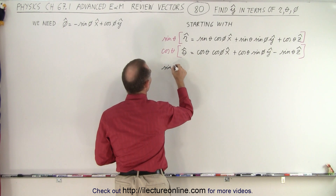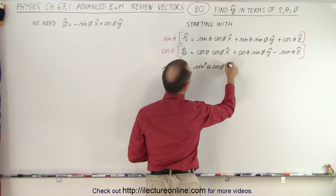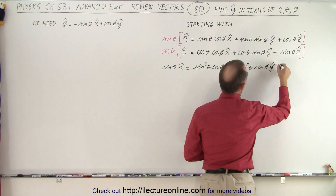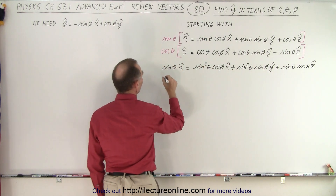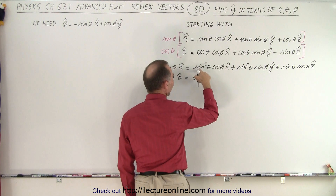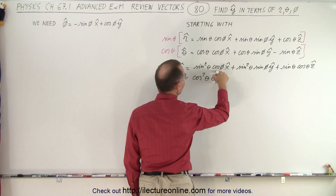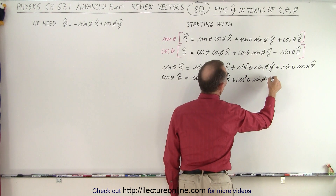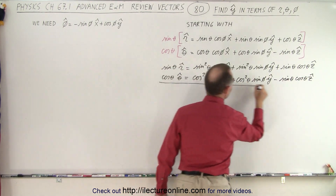So here we end up with sine of theta times the r-unit vector equals sine squared of theta cosine of phi times the x-unit vector, plus sine squared of theta times sine of phi times the y-unit vector, plus sine of theta cosine of theta z-unit vector. And for the second equation, cosine of theta times the theta-unit vector equals cosine squared of theta cosine of phi times the x-unit vector, plus cosine squared of theta sine of phi times the y-unit vector, minus sine of theta cosine of theta z-unit vector.